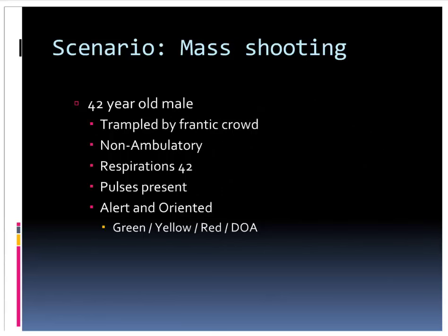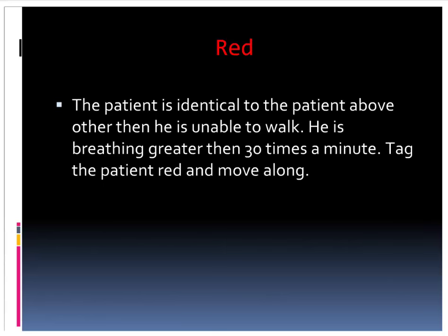A 42-year-old male trampled by the crowd fleeing the shooting. He's not able to walk, breathing 42 times a minute, pulses are present, and he's alert and oriented. Notice this patient is exactly like the previous one with a gunshot wound to the shoulder, but the key difference is he's not able to walk. Because he wasn't able to walk, the fact that he's breathing 42 times a minute now comes into play — and that makes him a red patient.